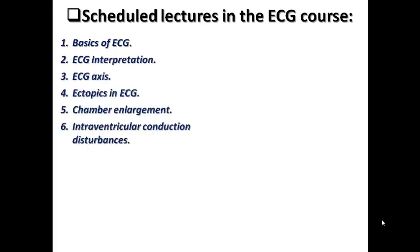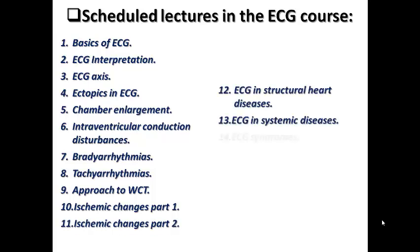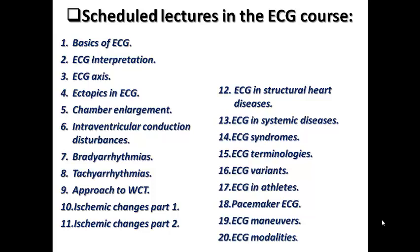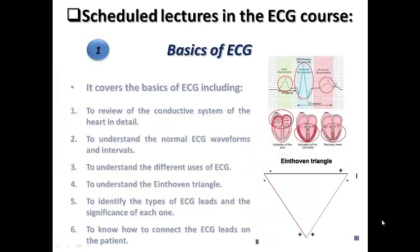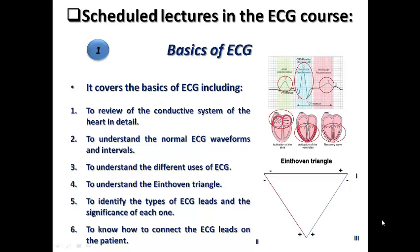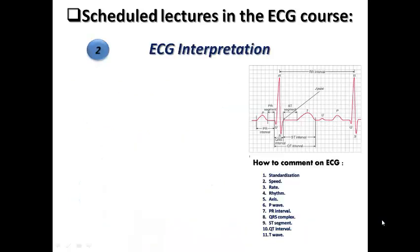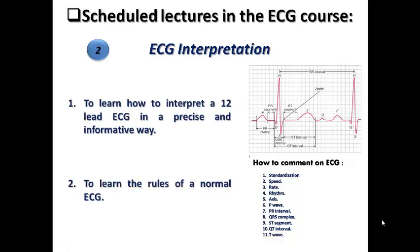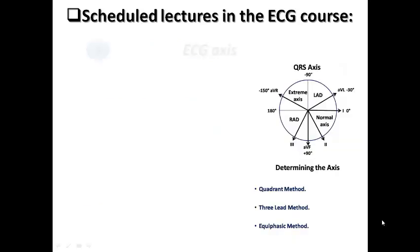Now we are going to speak about the scheduled lectures in this ECG course. We have about 20 lectures starting from scratch, each covering a certain point regarding the ECG. The first lecture covers basics of ECG — the conductive system of the heart in detail, normal ECG waveforms and intervals, different uses of ECG, the Eindhoven Triangle as a foundational theory, the types of ECG leads and significance of each, and how to connect the ECG on the patient. The second lecture covers ECG interpretation — a summary of how to interpret a 12-lead ECG in a precise and informative way, and the rules of normal ECG.